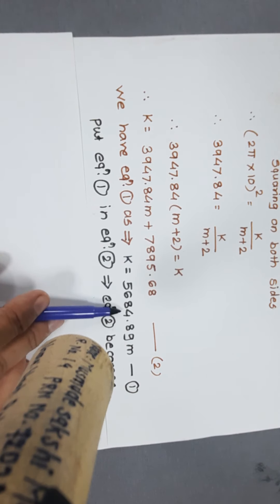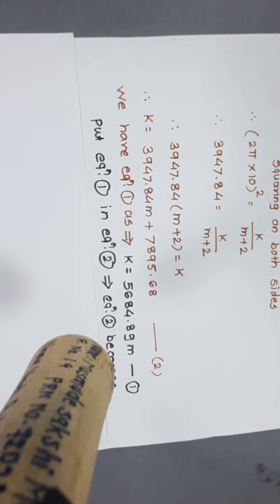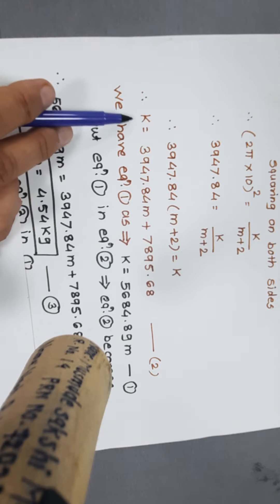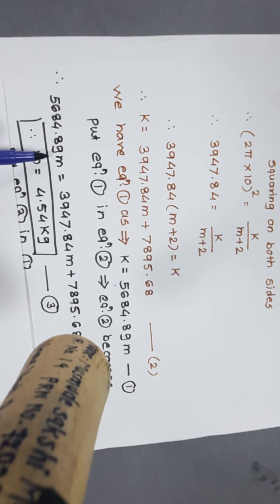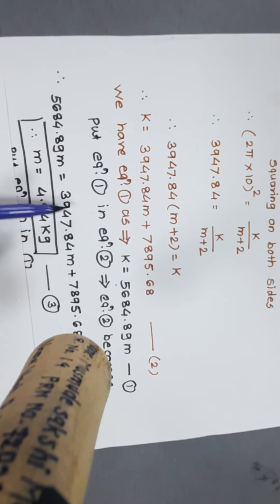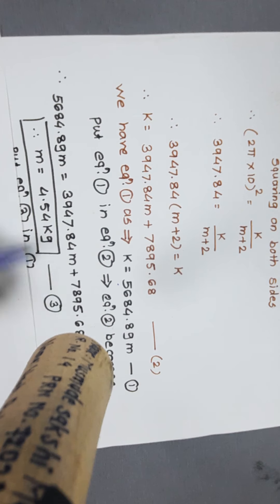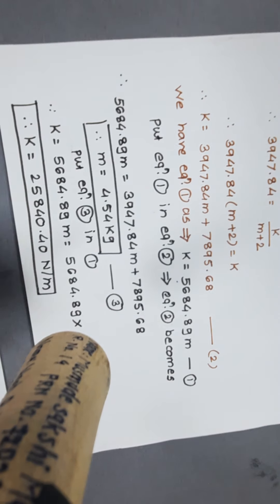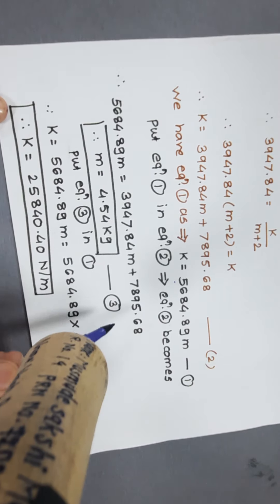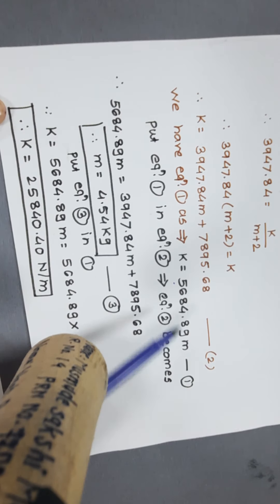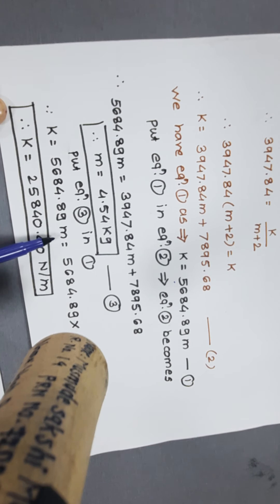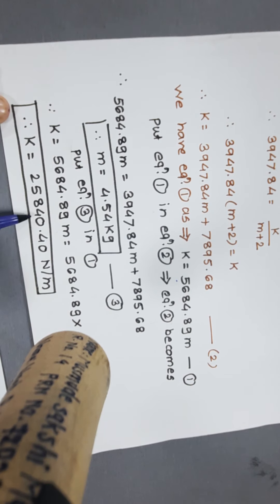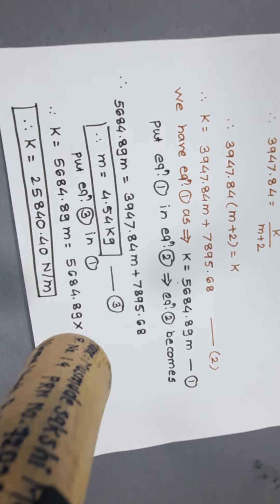We have equation 1: k = 5684.89m. Now substituting equation 1 into equation 2: 5684.89m = 3947.84m + 7895.68. Solving this gives mass m = 4.54 kg — this is equation 3. Substituting m = 4.54 kg back into equation 1: k = 5684.89 × 4.54 = 25840.40 N/m. So the spring stiffness k = 25840.40 N/m. This completes the first numerical.